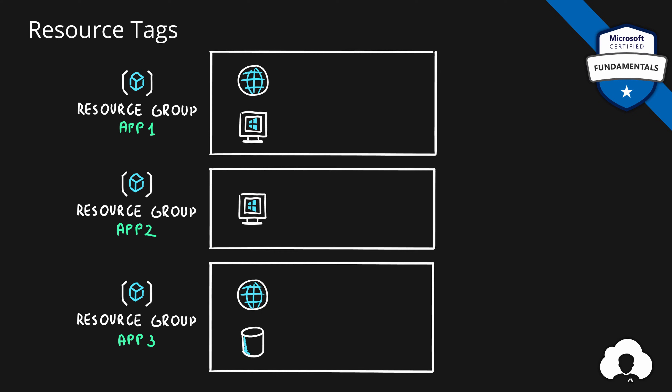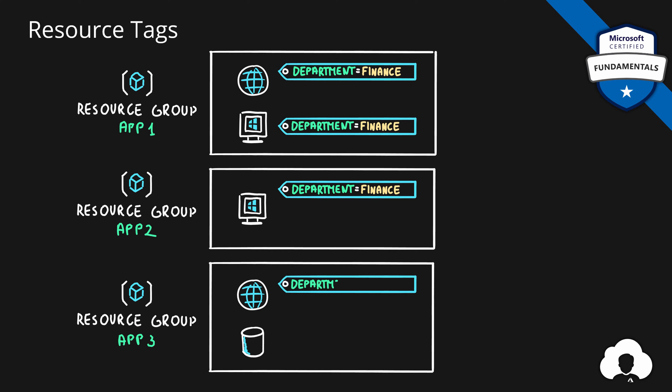If you want to assign a department name to your Azure resource you can do it with a tag. To do that you would locate this resource in Azure and then assign a tag giving it a name, for example 'department', and then a value, for example 'finance'. Tags allow you to add extra information to your Azure resources. So if your goal is to group your resources by departments, you could assign this department tag on every single resource in Azure and give it different values depending on which department owns the specific resources.